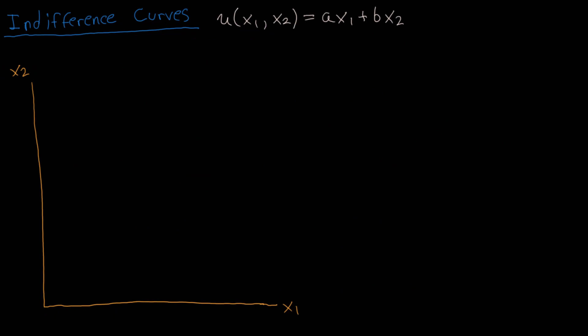Now I will go over the indifference curves associated with perfect substitutes. One nice property of this preference is that the utility function is linear, therefore the indifference curves will also be linear. By definition, an indifference curve is every possible bundle that yields the same level of utility. We can write any indifference curve as the utility for some set of bundles equal to some constant — for this example, let's say it's equal to 10.